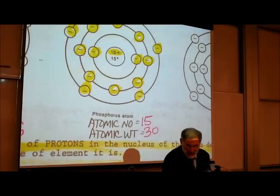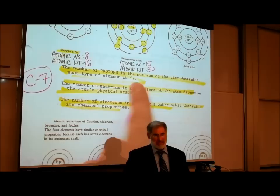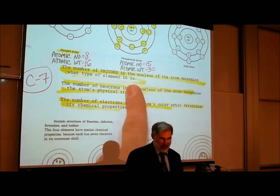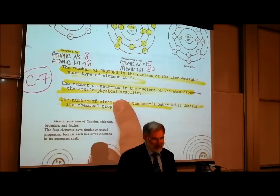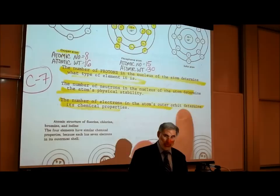Let me summarize three very important points, written on both page C1 and C7. First, the number of protons in the nucleus of an atom determines what type of element it is. Second, the number of neutrons in the nucleus determines the atom's physical stability. Third, the number of electrons in the atom's outer orbit determines its chemical properties.